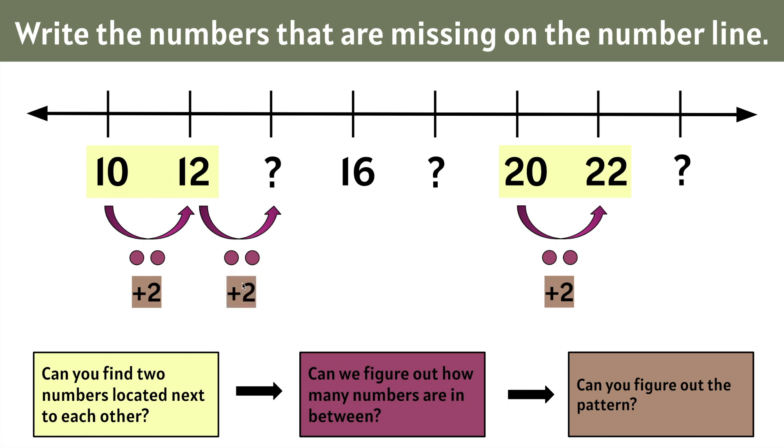We can figure out this missing number by adding 2 more to 12. Let's add 12 plus 2: 13, 14. 12 plus 2 more is 14. So this missing number has to be 14, and 14 plus 2 is 16.